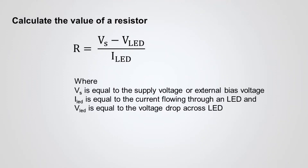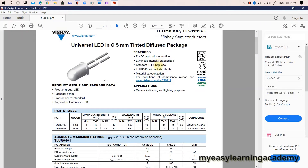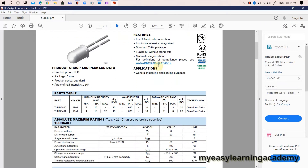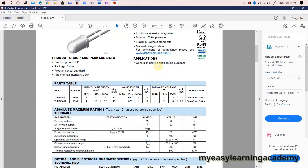To determine the value of a resistor, you can use the following formula. The voltage drop across an LED depends upon the color it emits. The current flowing through an LED can be found from the datasheet. The usual operating range of common 3 mm and 5 mm LEDs is 10 to 30 mA. If access to an LED datasheet is impossible, 20 mA is a good guess.